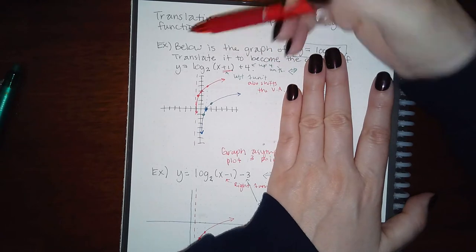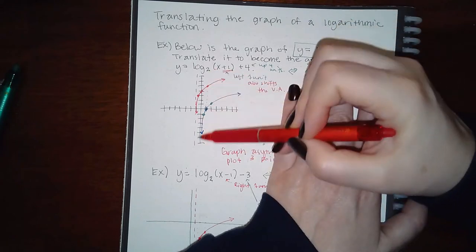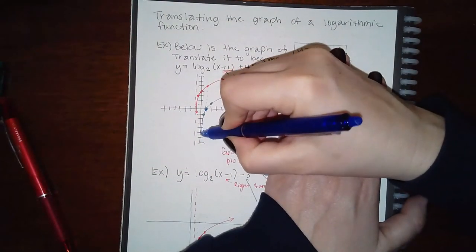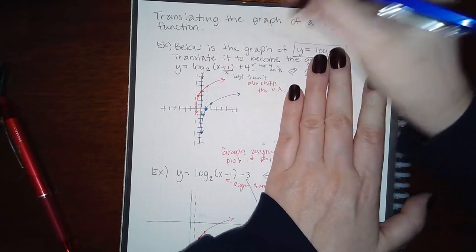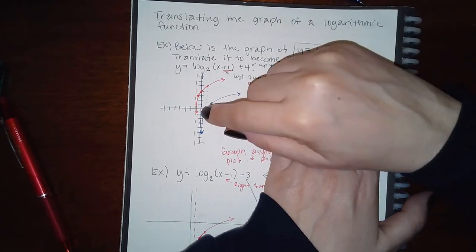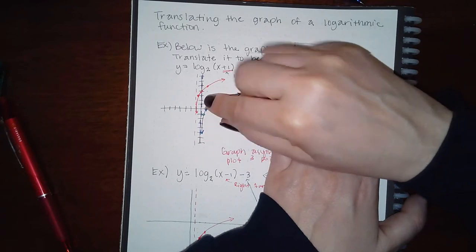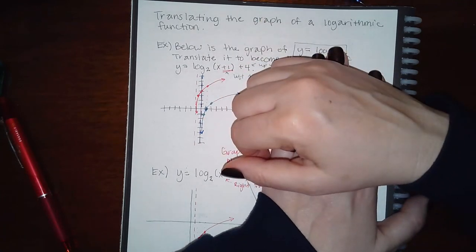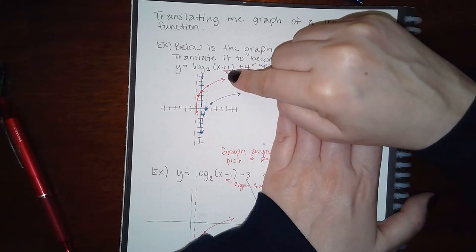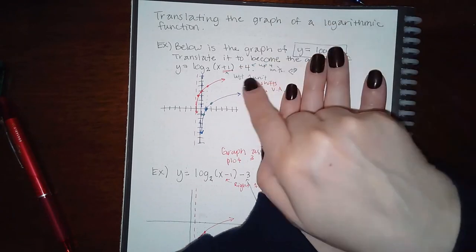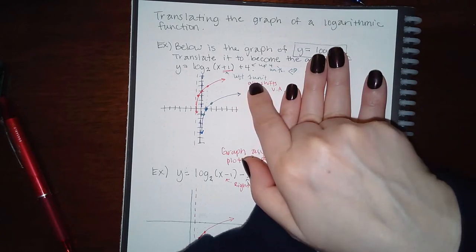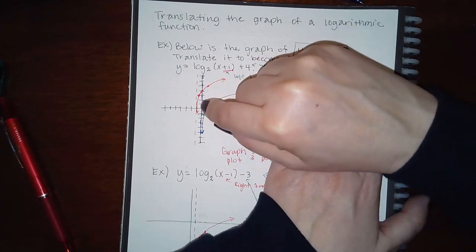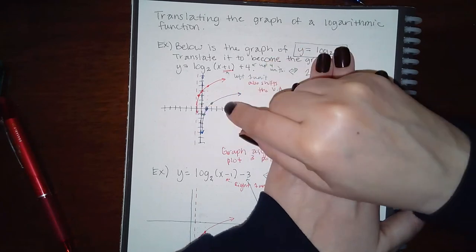When it comes to logarithms, there is a vertical asymptote. Normally that vertical asymptote sits on top of the y-axis. If you shift the function up or down, it doesn't really change the vertical asymptote — it just shifts up, but it still continues forever. It's when you go left or right that the asymptote moves. So if I'm moving to the left one unit, I also need to move the vertical asymptote one unit.